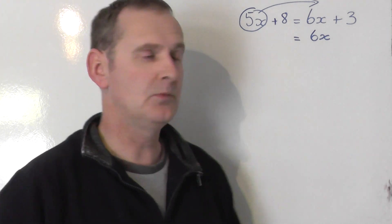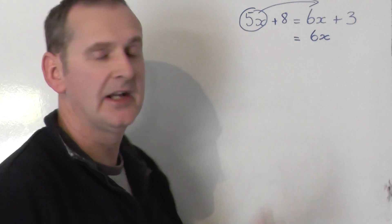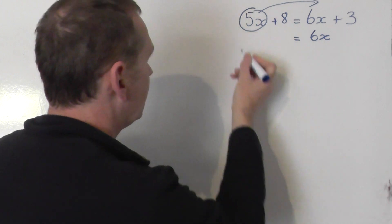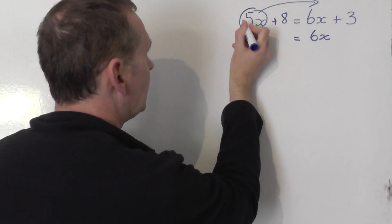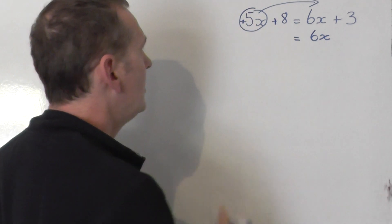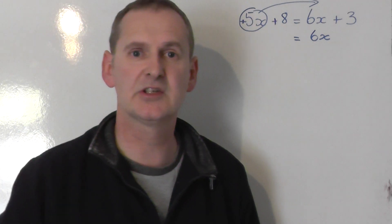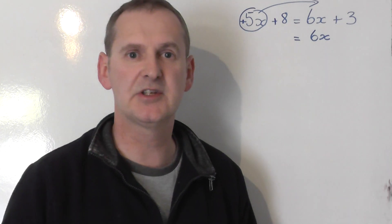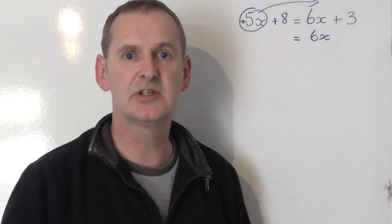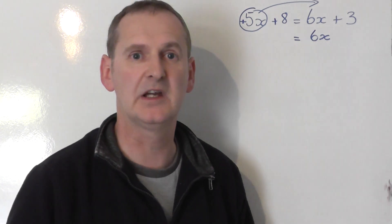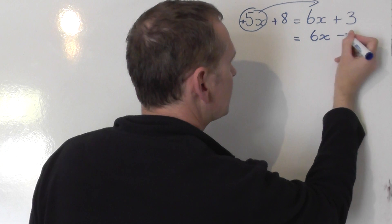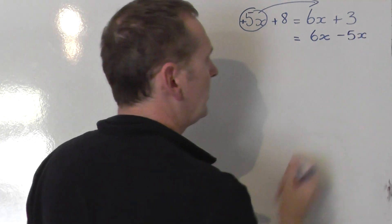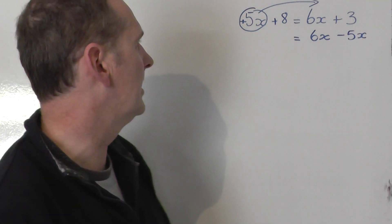To begin with, there is a plus sign in front of that 5x. There isn't a sign that you can see, but that also means it's a plus 5x. Take the plus 5x to the other side and it changes to a minus 5x. So on the right-hand side, we get a minus 5x appearing.